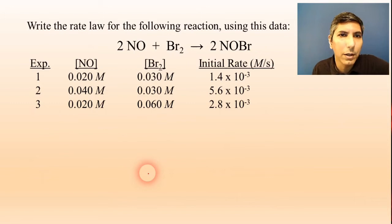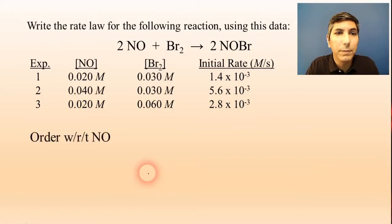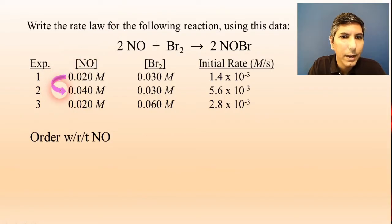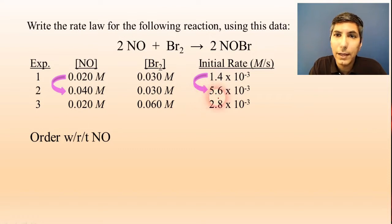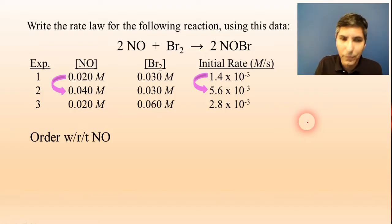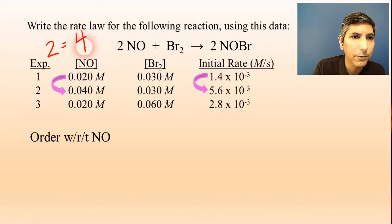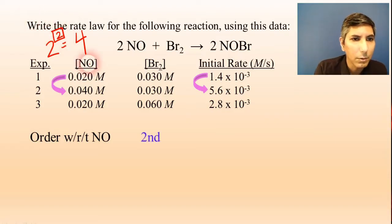Now let's try another example with a new reaction — same type of problem, just different numbers and equation. We want to find the order with respect to NO, so we look for two experiments where NO is the only reactant changing concentration. Experiments one and two work because NO is doubling while bromine is constant. The rate goes up by a factor of four from experiment one to two. Since the concentration doubles and the rate quadruples, the order is second order with respect to NO.